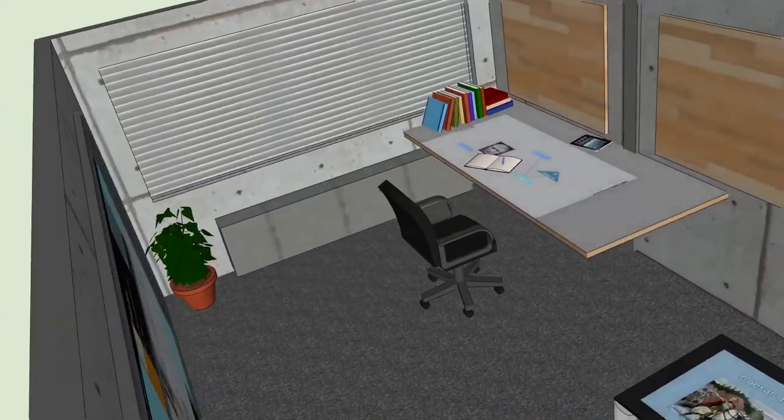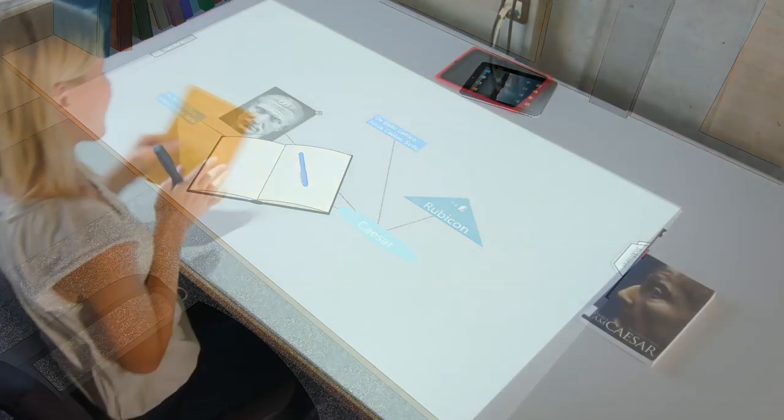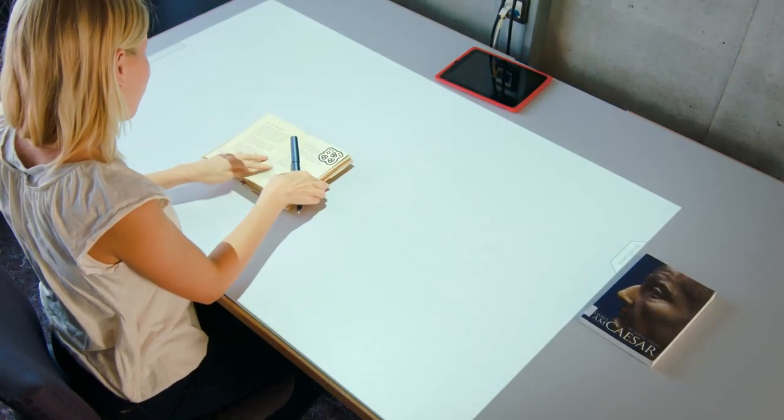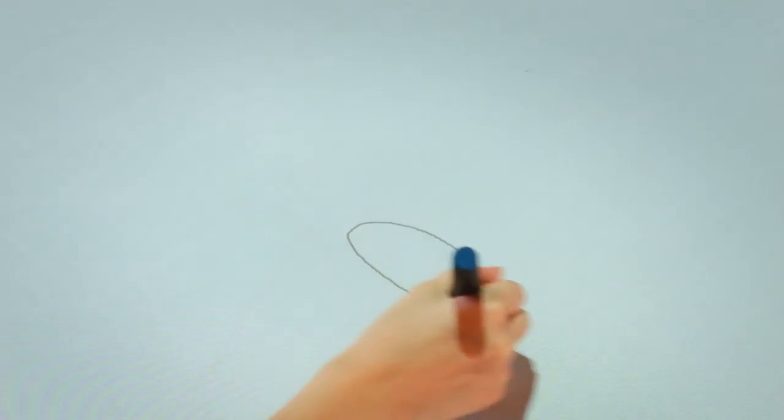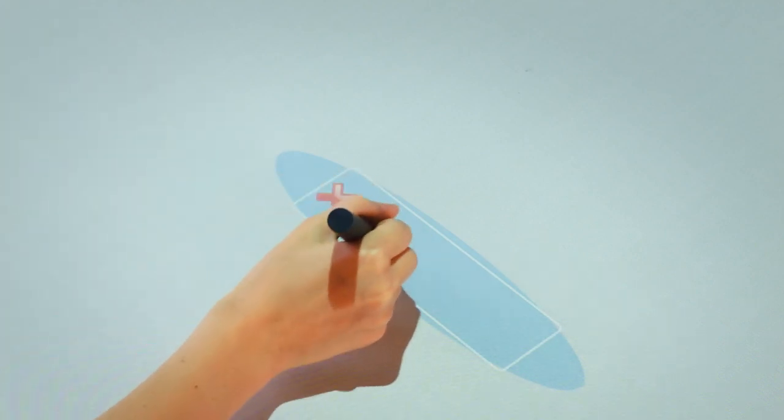Having found both books, Lena returns to the Living Lab, sits at the digital desk, and starts reading the book. She hopes to find information in the book that is relevant for her group's presentation, and starts creating a mind map.